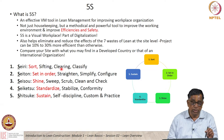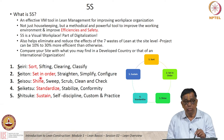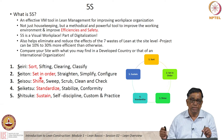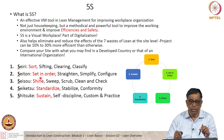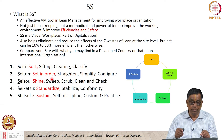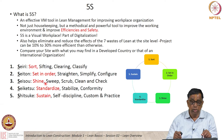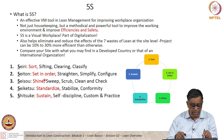5S has 5 major components: Sort, Set in Order, Shine, Standardize, and Sustain. Basically, you keep only the items required for work in the immediate environment, removing the others. Whatever you retain must be kept in proper order — a place for everything and everything in its place — and kept in good working condition, well cleaned up. Then you have a standard approach across the site and make it sustainable in the long run.